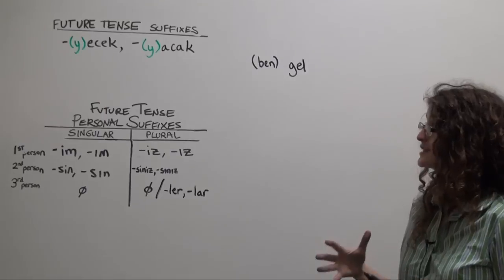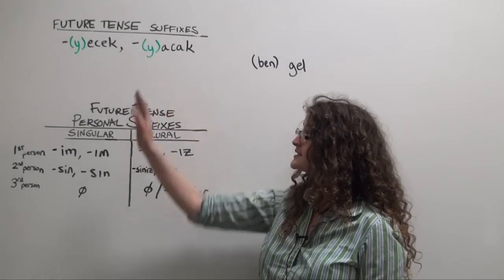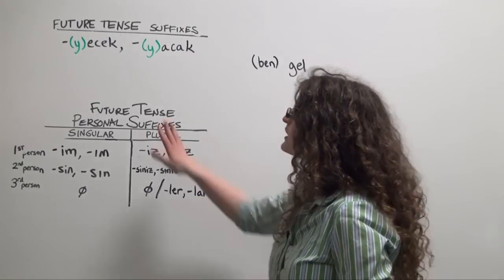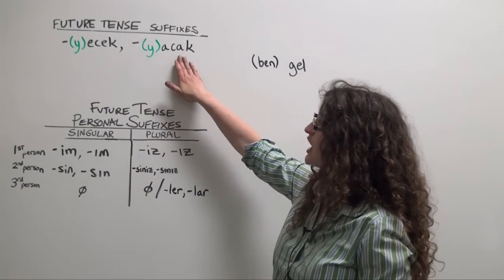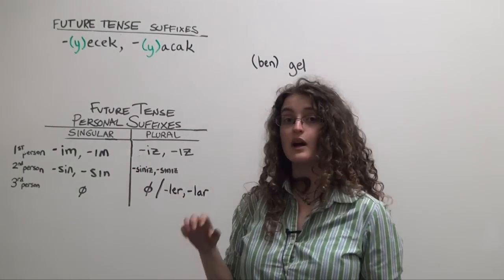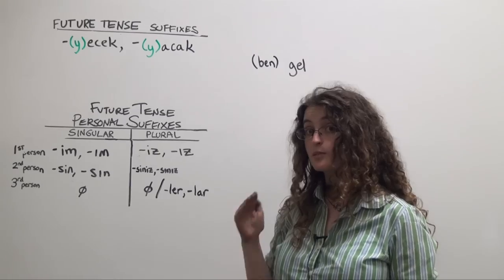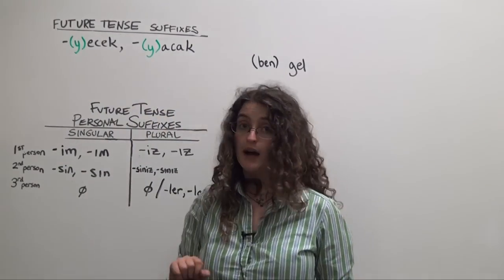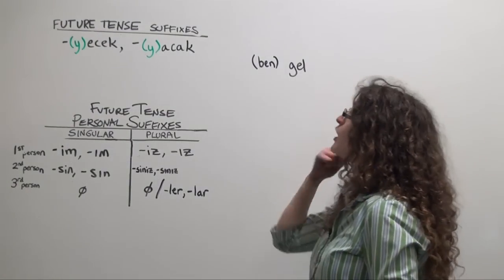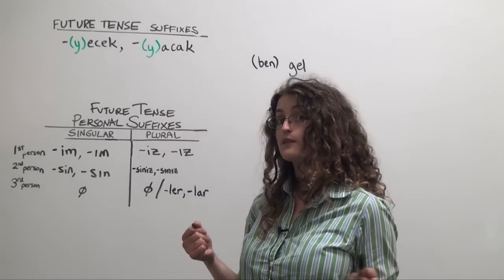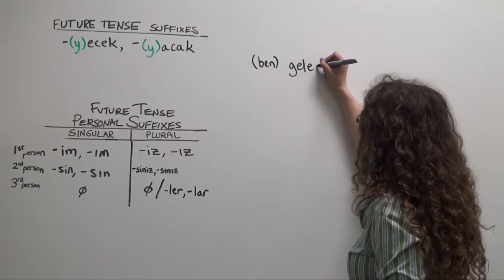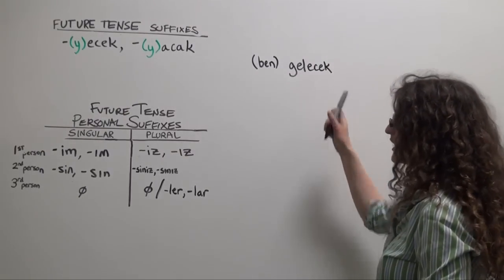Now to gel we'll simply attach the appropriate form of the future tense suffix. As you can see, the future tense suffix follows the rules of two-way vowel harmony. So it can be either ejek or ajak. And if the verb you're attaching the future tense suffix to, if the stem of that verb ends in a vowel, you'll need to insert a buffer y. Let's see gel, nope, ends in a consonant, so we don't need a buffer y. We just choose the appropriate form according to two-way vowel harmony. So gel ejek. Gel ejek, okay.